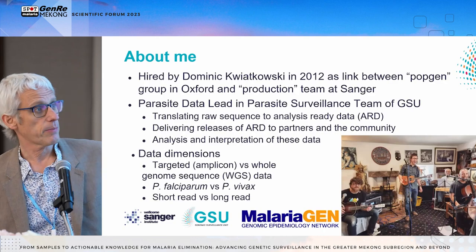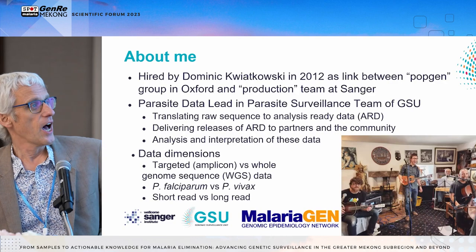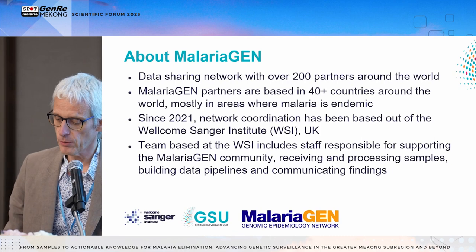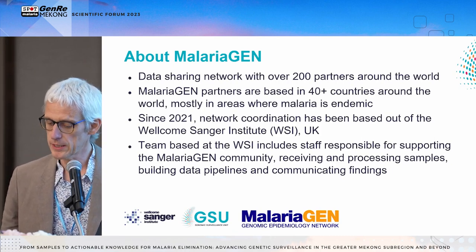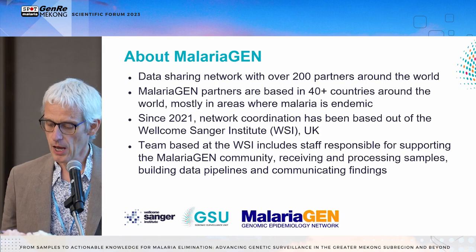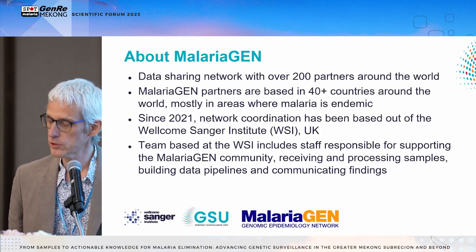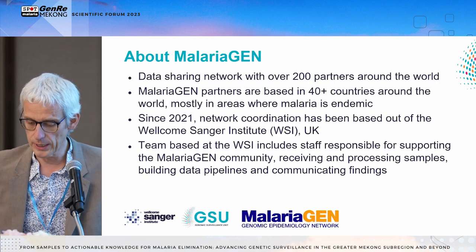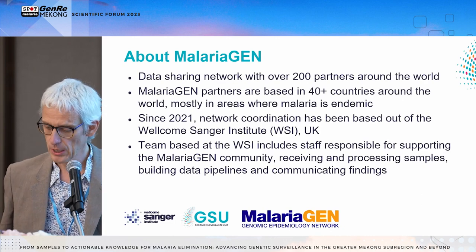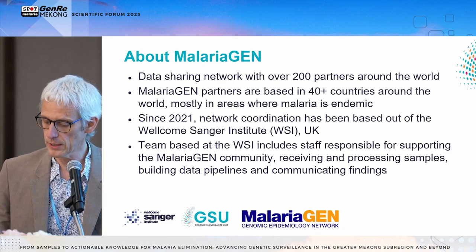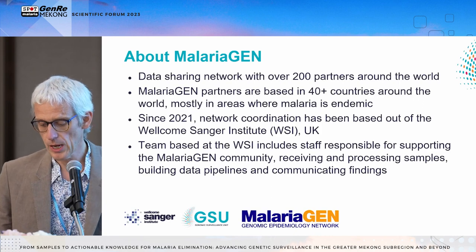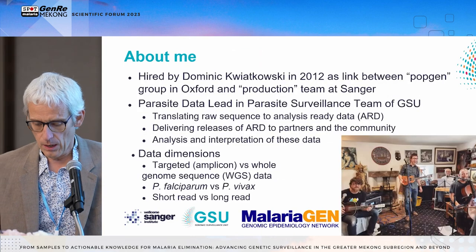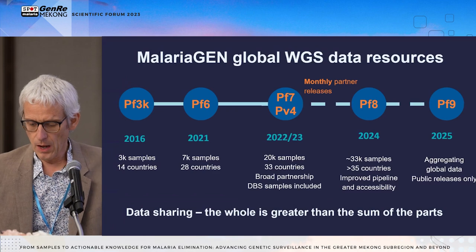When I'm not sequencing parasites I'm in a group called Wood Street Dogs, but the far more important group I'm part of is MalariaGen. The Malaria Genomic Epidemiology Network is a data-sharing network with over 200 partners based in over 40 countries, most of which are malaria-endemic. Since 2021, network coordination has been based out of the Sanger Institute, and our team there includes staff supporting the MalariaGen community, receiving and processing samples, building and running data pipelines, and communicating problems.